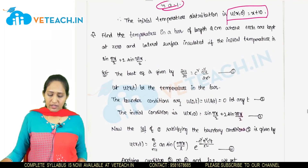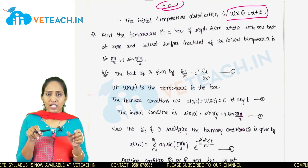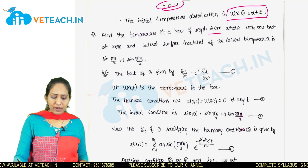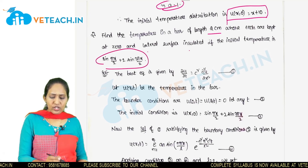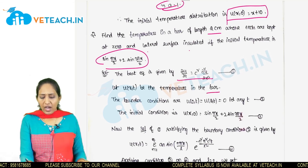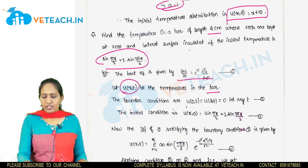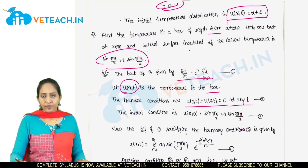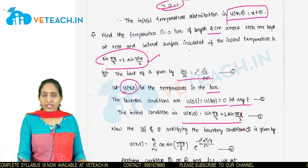Problem 2: Find the temperature in a bar of length 2 cm whose ends are kept at 0 degrees centigrade and whose lateral surface is insulated, given some initial temperature distribution. The boundary conditions are u(0, t) = 0 and u(2, t) = 0 for any t. The initial condition is u(x, 0) = f(x), the given initial temperature.